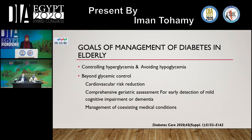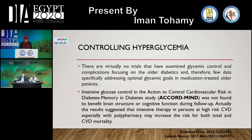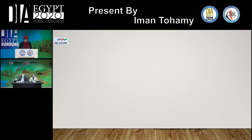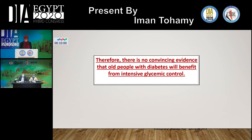Goals include controlling hyperglycemia while avoiding hypoglycemia. Beyond glycemic control, we should pursue reduction of cardiovascular risk and comprehensive geriatric assessment for early detection of mild cognitive impairment and dementia, with management of coexisting medical conditions. Large randomized trials of older adults with diabetes have failed to show convincing cardiovascular benefits from intensive glycemic control. In fact, aggressive glucose lowering was associated with higher risk of hypoglycemia and early cardiovascular deaths, suggesting that aggressive glucose control may cause harm in this population. There is no convincing evidence that all people with diabetes will benefit from intensive glycemic control.